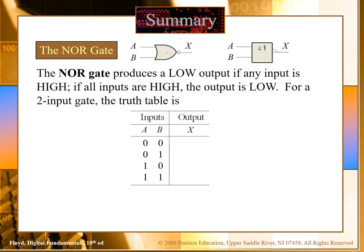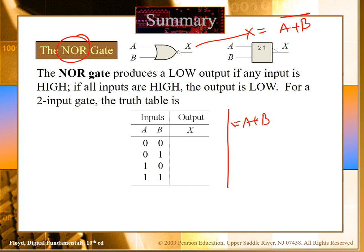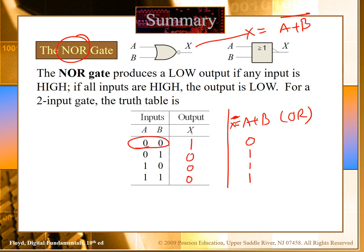If you combine the OR gate and the NOT gate, it becomes the NOR gate. Mathematically this is A plus B with a bar on top. In the OR case we were getting a low output only when both inputs were low; otherwise we were getting a high. So in the NOR gate, because of the inverter, we get the opposite: only when both inputs are low will we get a high output. AND plus NOT gives NAND; OR plus NOT gives NOR.